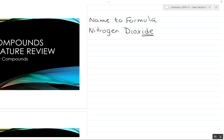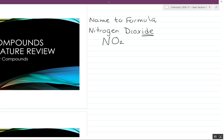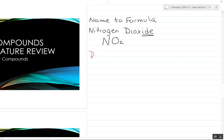So nitrogen dioxide tells us that we have N and O2. Next is diphosphorous pentoxide.